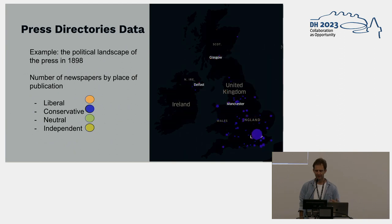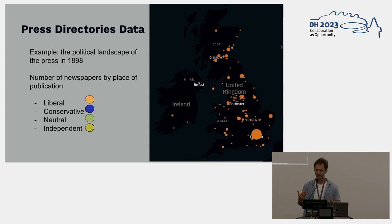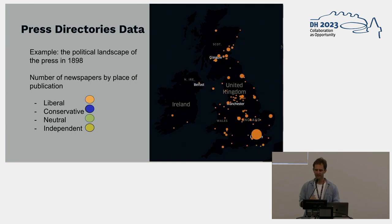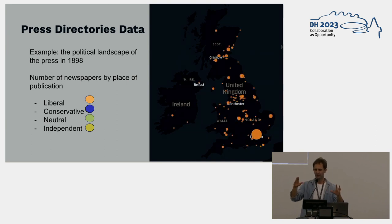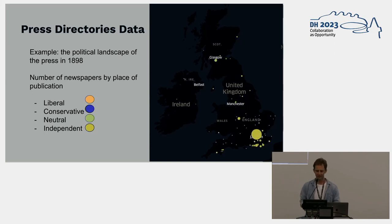This gives you an idea of what the data looks like. This is our press directory visualization showing the number of newspapers by place — the dot size indicates how many newspapers were published, and the color gives an indication of the politics. It shows you the political geography of the British press for one year, though we have it for almost every year so you could also do this over time.